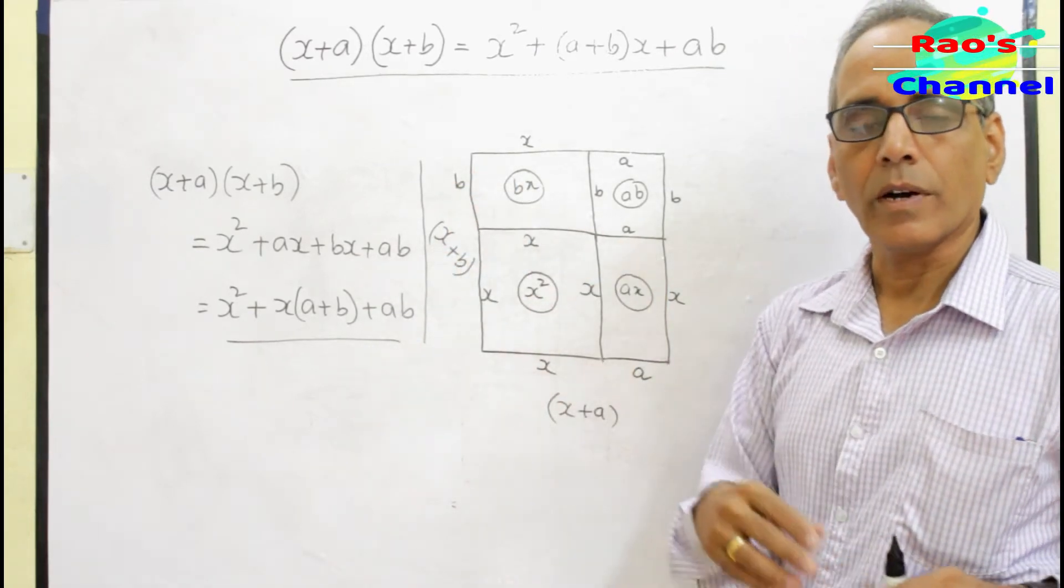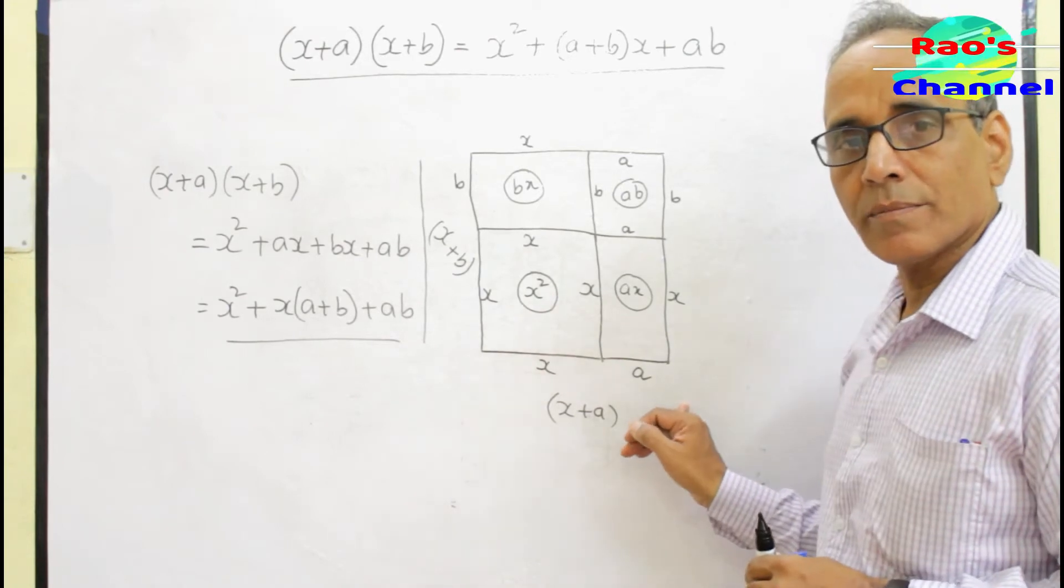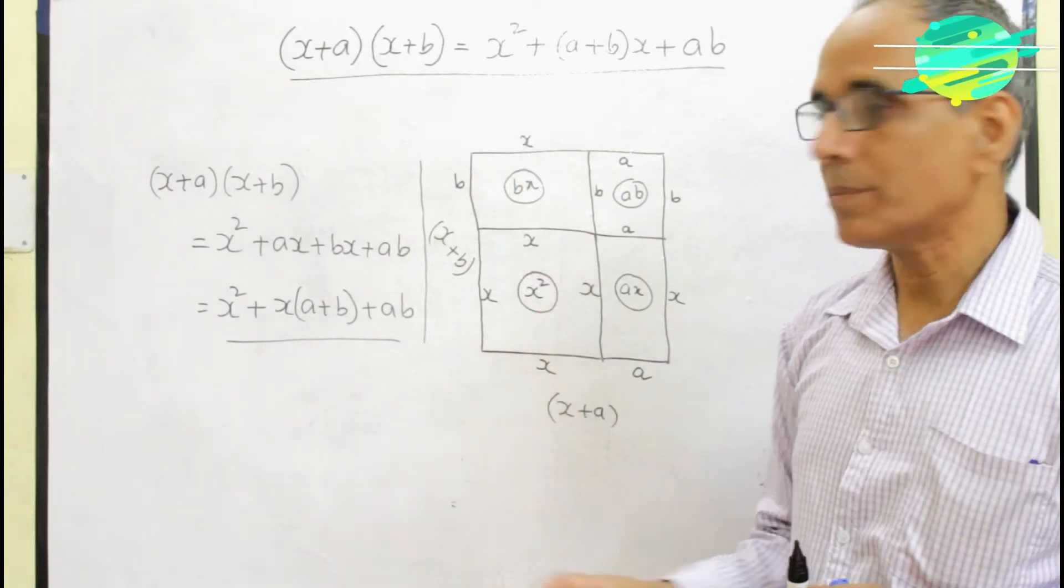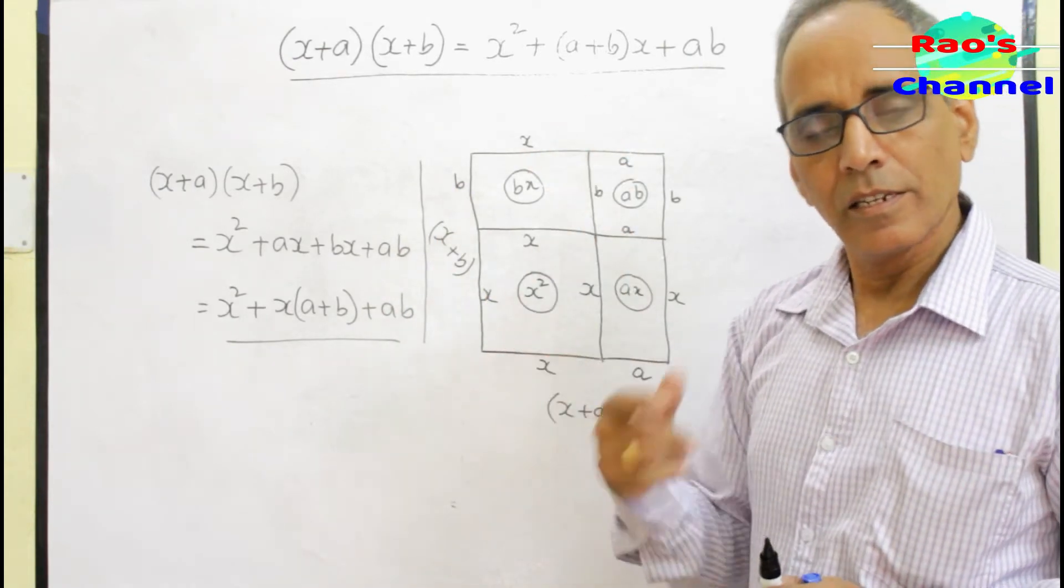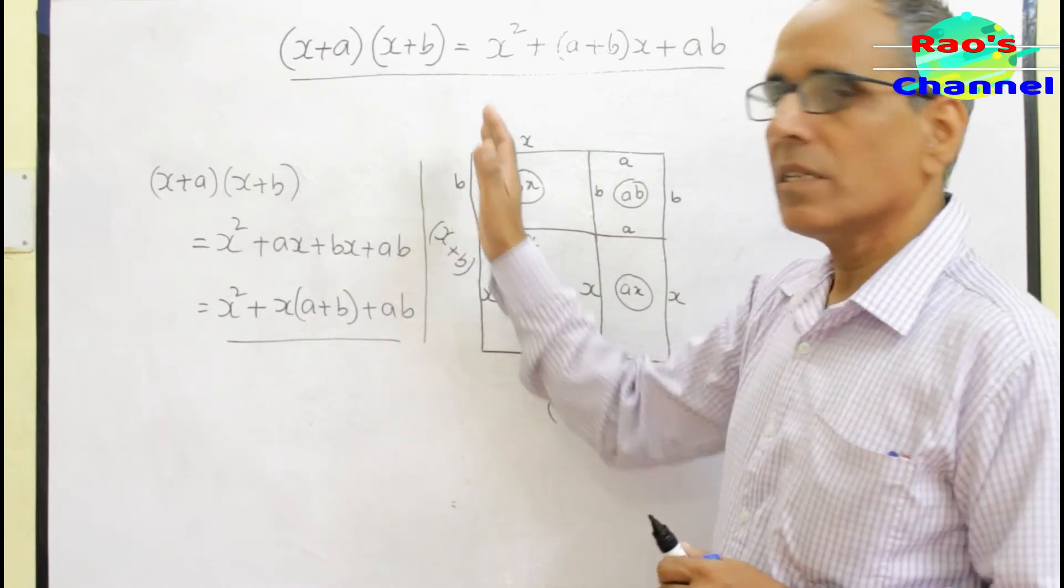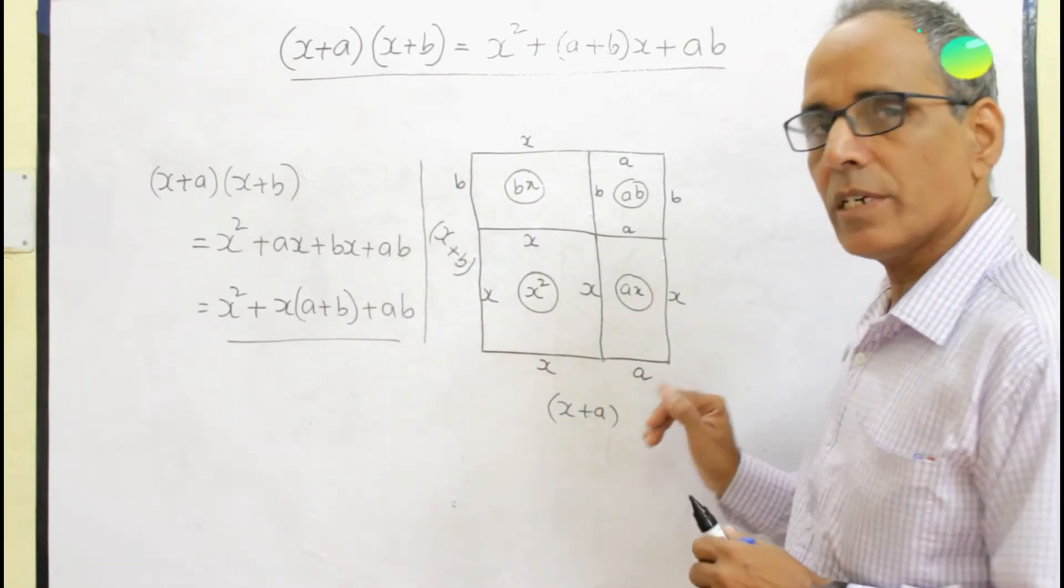What happens if I increase one side by a units and decrease the other by b units? Can you derive this? You can try the same way.